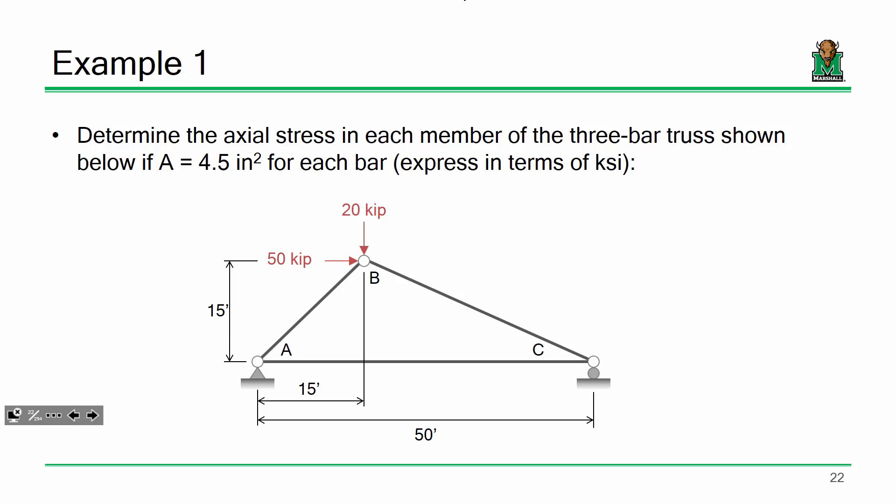We introduced a term at the very end — we said, what if sigma allowable was 12 KSI? Based on that value, we were able to make some gut-feeling decisions: two of those members were kind of close to that limit. They didn't exceed 12 KSI, but they were close. We said, if this truss was a bridge carrying your grandmother to the grocery store every day, you might not feel too comfortable. But one of those members had a stress of only about 0.4 KSI — that member looks like it's way over-designed. We can probably thin it up and make it more economical.